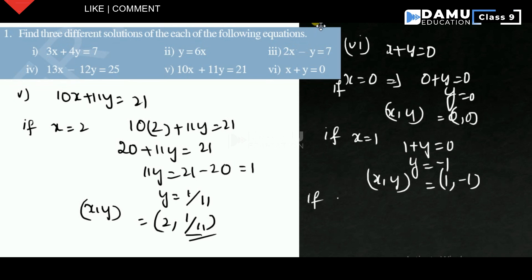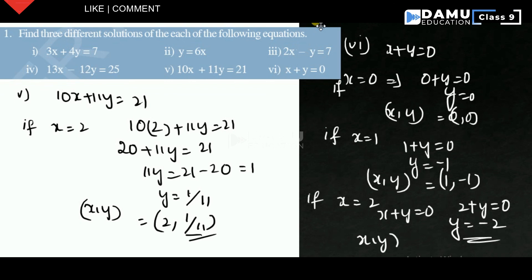For the third solution of x + y = 0, if x = 2, then 2 + y = 0, so y = -2. The solution is (2, -2). Like this we need to find the solutions for each equation.